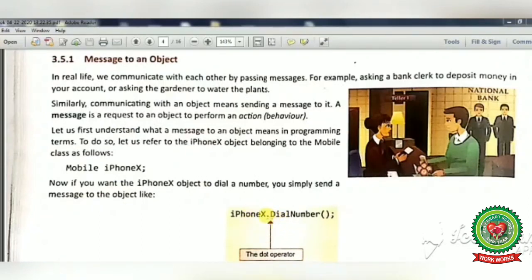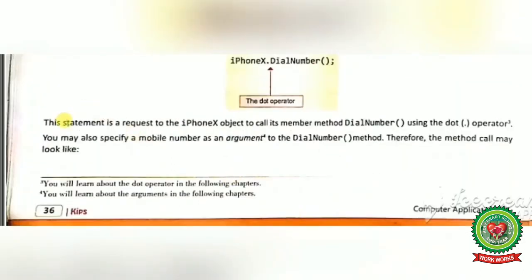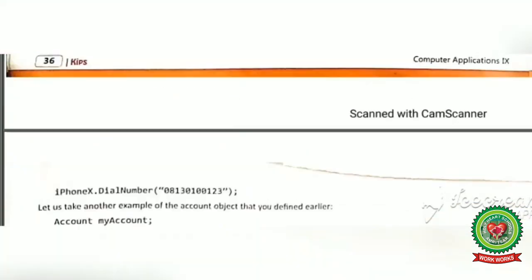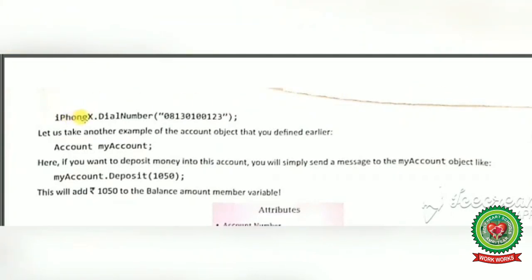The dot operator is used by the object to call its member method. The statement is a request to the iPhoneX object to call its member method dialNumber. You may also specify a mobile number as an argument, so the statement would look like: iPhoneX.dialNumber("mobile_number");